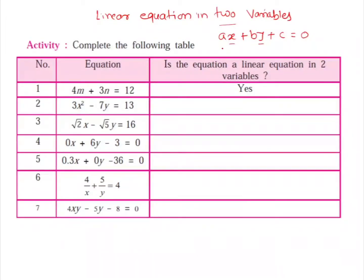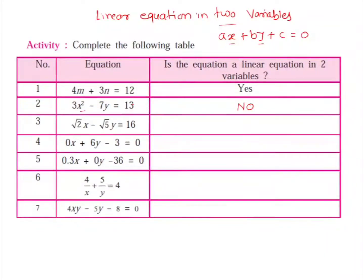We use this general form to decide whether the given equations are linear equations in two variables or not. Consider the second equation: 3x² minus 7y equals 13. Two variables x and y are present, so the first condition is satisfied. However, the degree of this equation is 2 because the highest power of its variables is 2, as x² is present. Therefore it is a quadratic equation and not a linear equation.